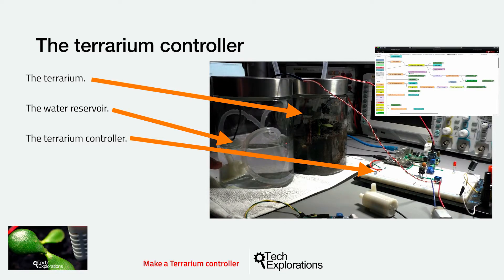By the end of this project, you'll have created a control system for a terrarium. A terrarium is simply a container in which you add some soil and a small plant. Personally, my motivation for this project was not the terrarium itself. I'm not very good with plants and only have limited interest in being a gardener. But when I combined plants with technology, things became much more interesting.